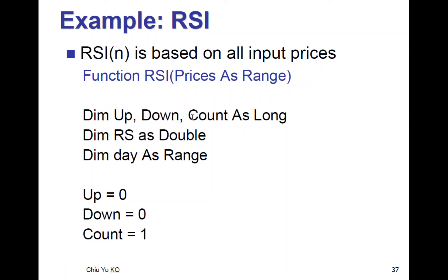So here we define Up, Down, and Count as long. And Count will be counting days. Up and Down are actually column E and F. And we don't need to save column C and column D. We calculate as we see.